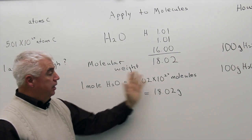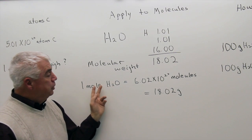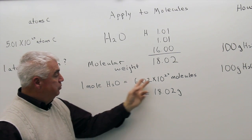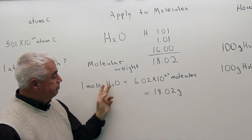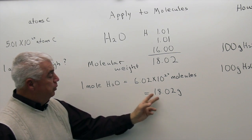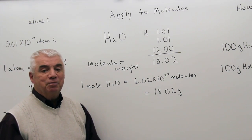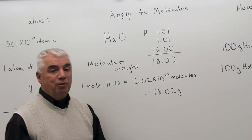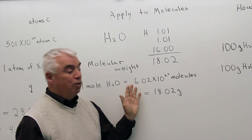Let's work a problem based upon this equation. We actually have three equations here: one relating moles and molecules, one relating molecules and grams, and one relating moles and grams. Each of those equations could produce two factors, so there are six problems we could work with molecules — just as there were six different problems we could work with atoms. Every one of the problems is worked exactly the same, and we can do them in one step.